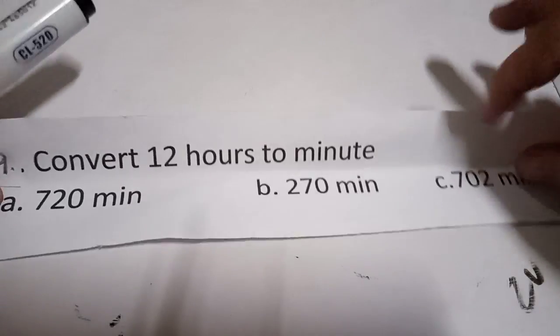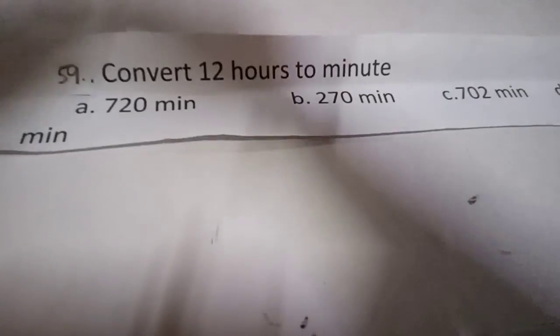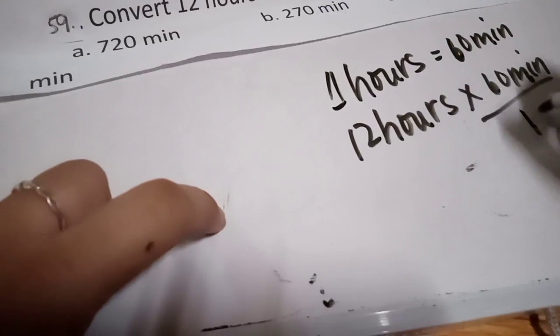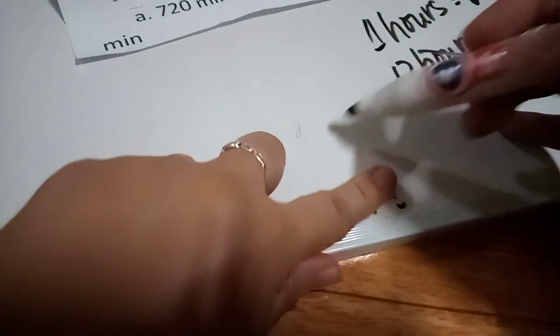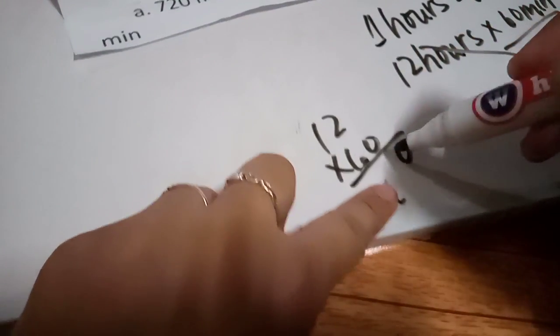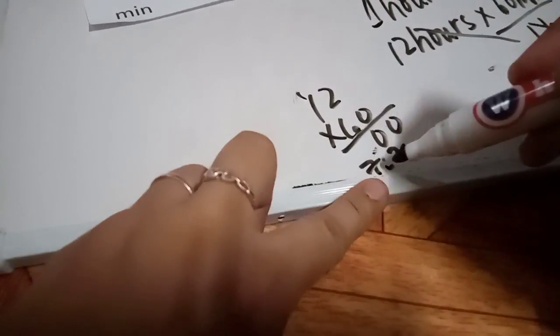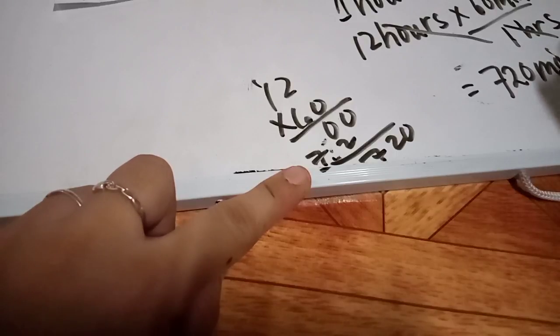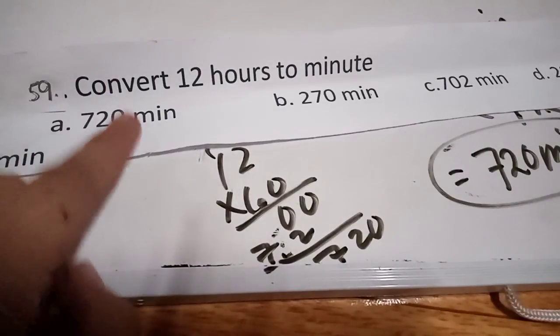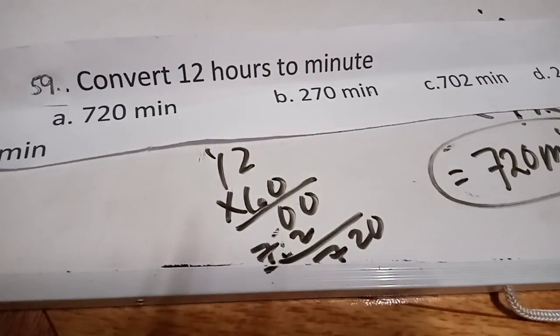For number 59: convert 12 hours to minutes. In every one hour, there are 60 minutes. So: 12 hours times 60 minutes per hour — the hours cancel, giving 12 times 60. That equals 720 minutes. The answer is 720 minutes, letter A.